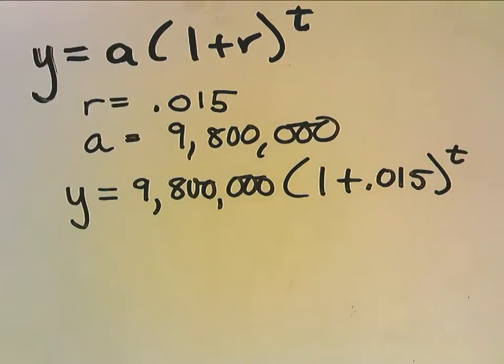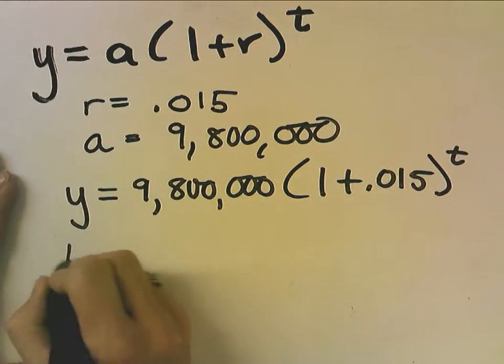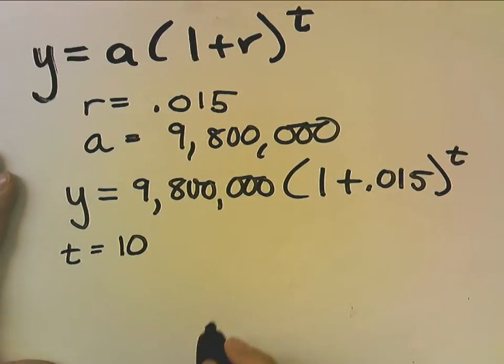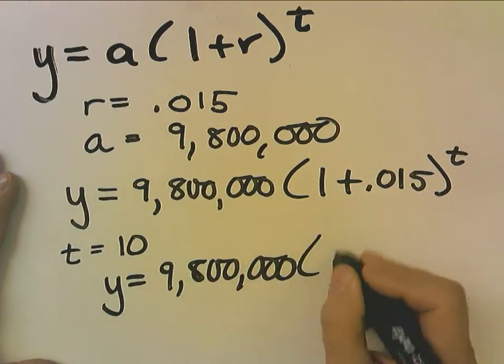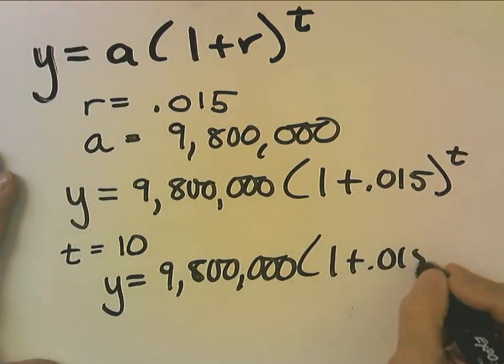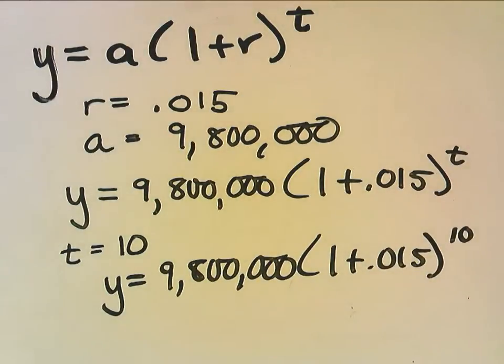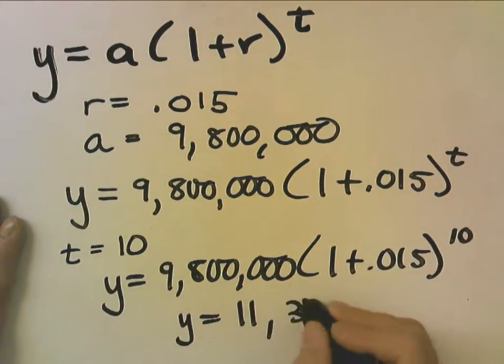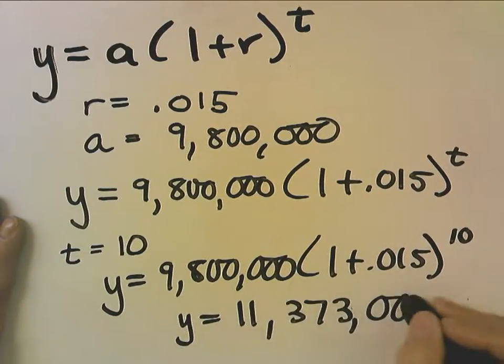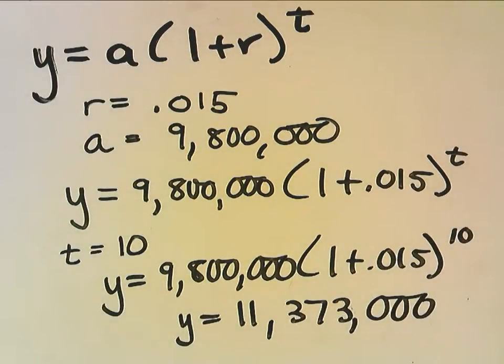Then, they want us to assume the country's population growth remains constant. What will the population be rounded to the ones place in 2011? Well, from 2001 to 2011, they're basically telling me t equals 10. So, now, I'm going to substitute 10 for t. We put this into the calculator, and we get y equals 11,373,000.